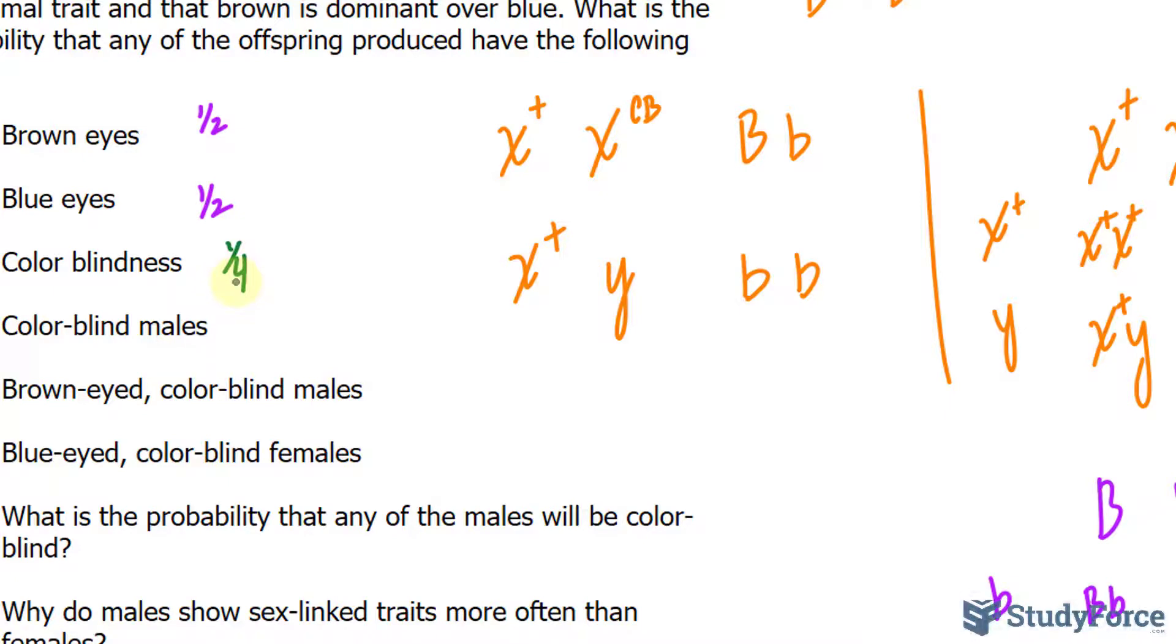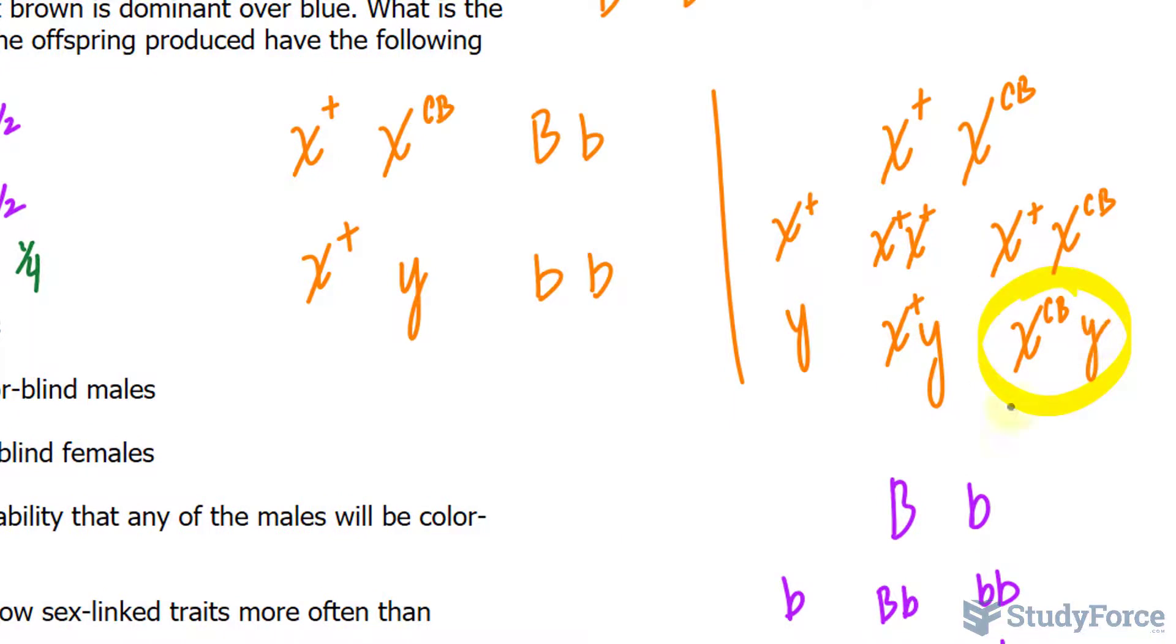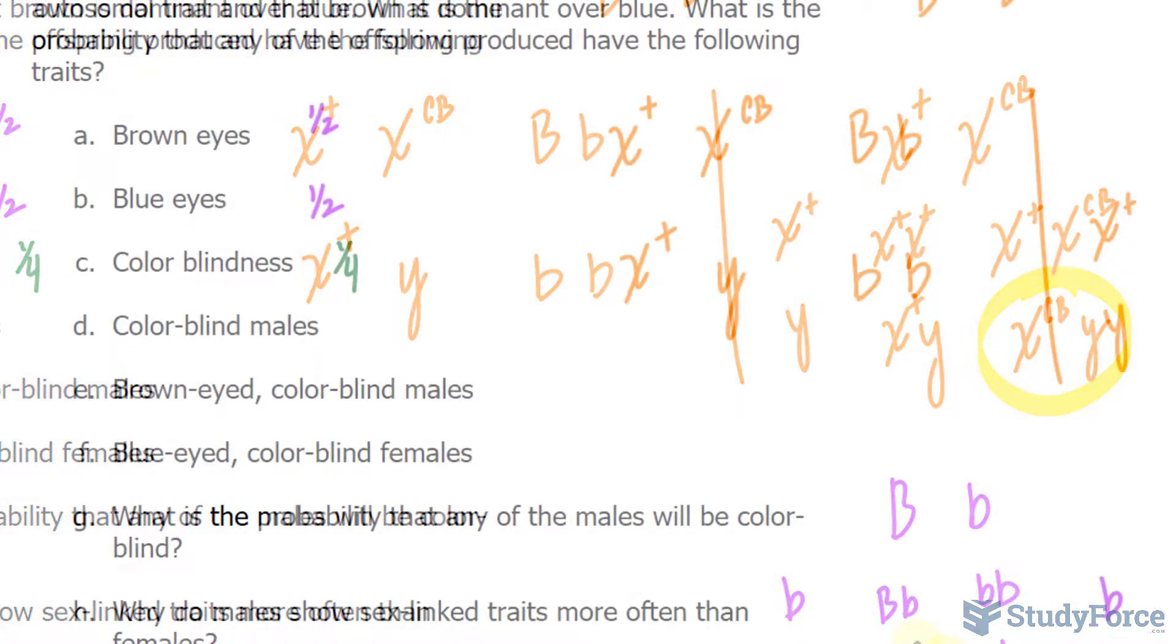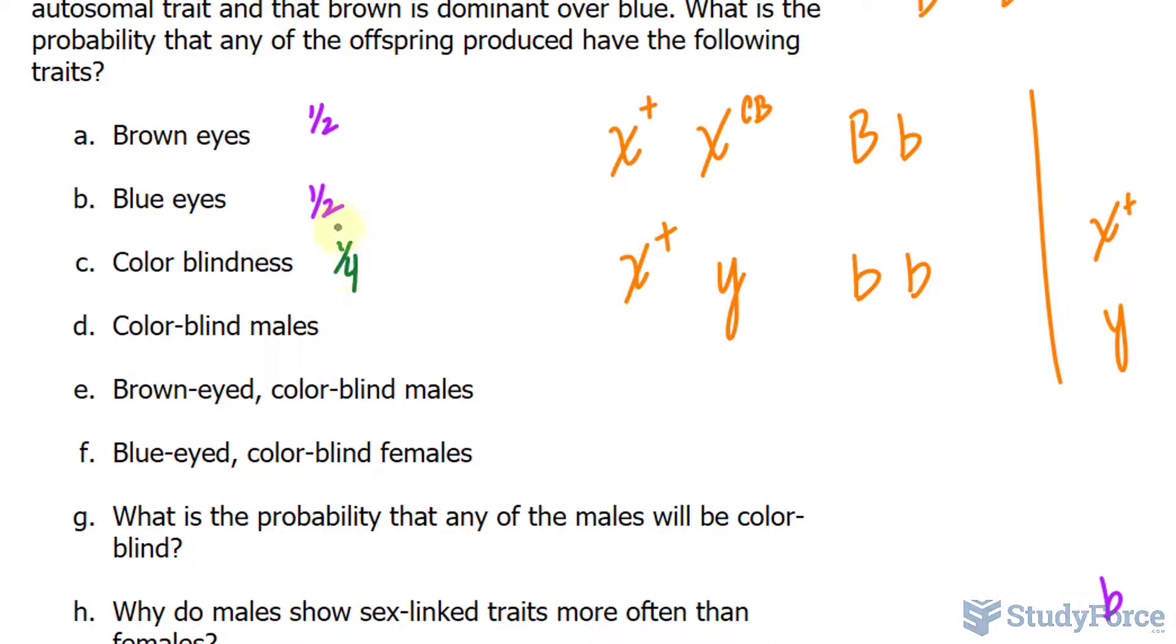Colorblind males. Remember, there's a half chance that the offspring will be male, and of the two genotypes for that male, half of them will be colorblind. So multiplying half and half, one over two times one over two, makes a quarter. We will write down the same probability as in C, being one in four.